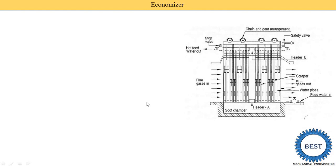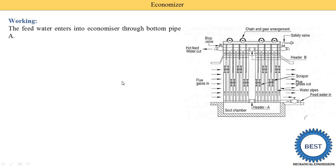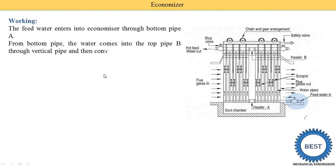The feed water enters into the economizer through the bottom pipe A — that is the feed water inlet pipe. From the bottom pipe, the water comes into the top pipe B through the vertical pipes, and then it comes into the boiler. So water enters from the bottom, moves through the vertical pipes, and collects in horizontal pipe B, then it is supplied to the boiler.